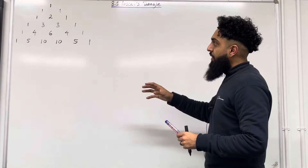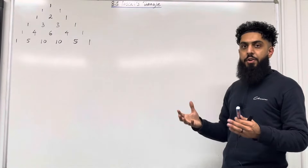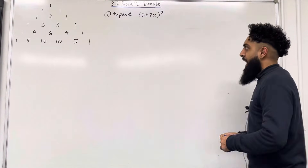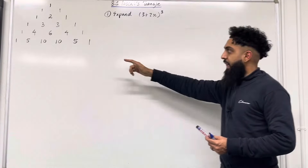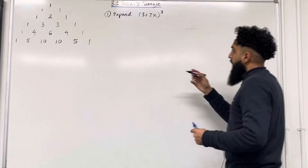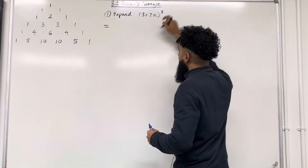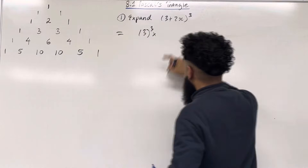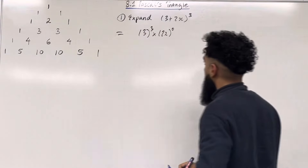We are going to be using Pascal's Triangle in order to expand binomials. Here is Example 1: we are going to expand (3 + 2x) to the power of 3 using Pascal's Triangle. First step: we take 3, raise it to the power of 3, multiplied by 2x raised to the power of 0.